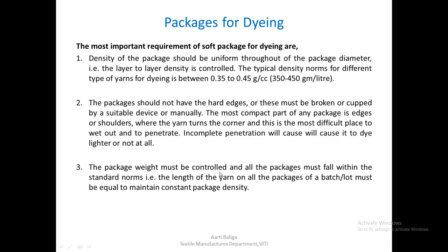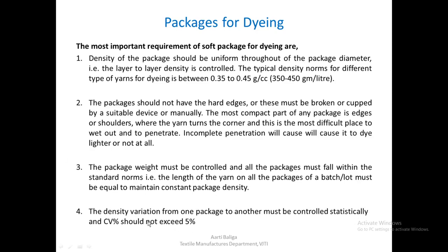The package weight must be controlled and all the packages must fall within the standard norm — that is, the length of the yarn on all the packages of a batch or lot must be equal so as to maintain constant package density. Not only the softness or hardness of the package is very important, but also the weight — indirectly, the length wound on the packages — should be uniform so as to result in uniform dyeing. The density variation from one package to another must be controlled statistically and the CV should not exceed 5%.